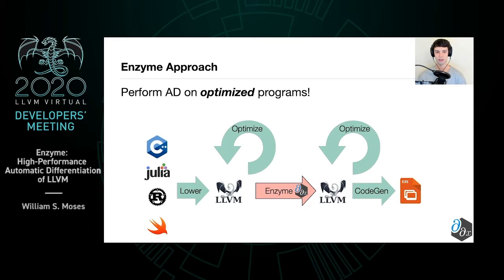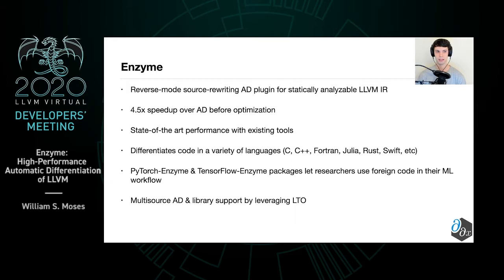Specifically, we present Enzyme, a source rewriting tool for LLVM that's able to produce gradients of statically analyzable code. By doing AD after optimization, we're able to achieve a 4.5x speedup and, as a consequence, state-of-the-art performance with existing tools. Because we work on LLVM, we're able to differentiate code in a variety of languages such as C, C++, Julia, Rust, Swift, etc.